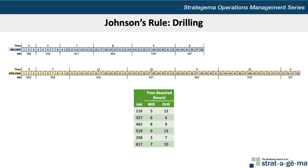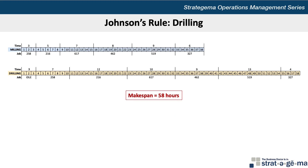Finally, job 327 can start right after 519 at the beginning of the 55th hour, takes 4 hours to complete, and will finish at the end of hour 58. Thus, the make-span — which is the time needed to process a given set of jobs — is 58 hours, comprised of the 55 hours to complete the drilling for all jobs plus the 3 hours of idle time incurred while waiting for the first job to make its way through the milling department.